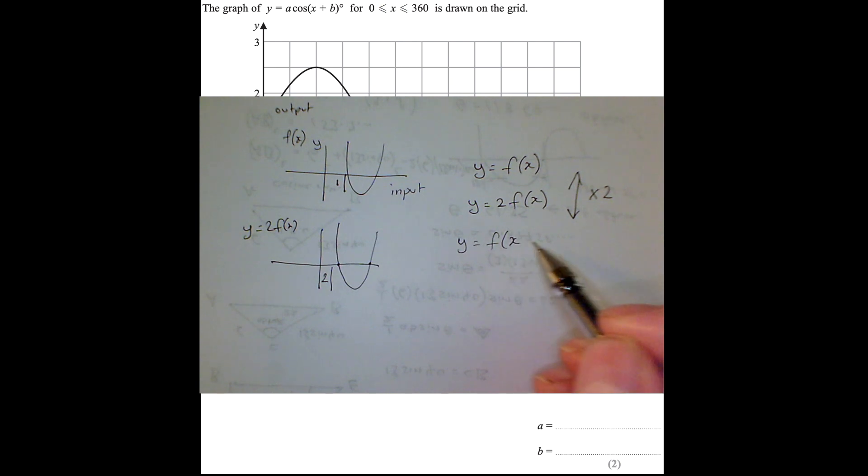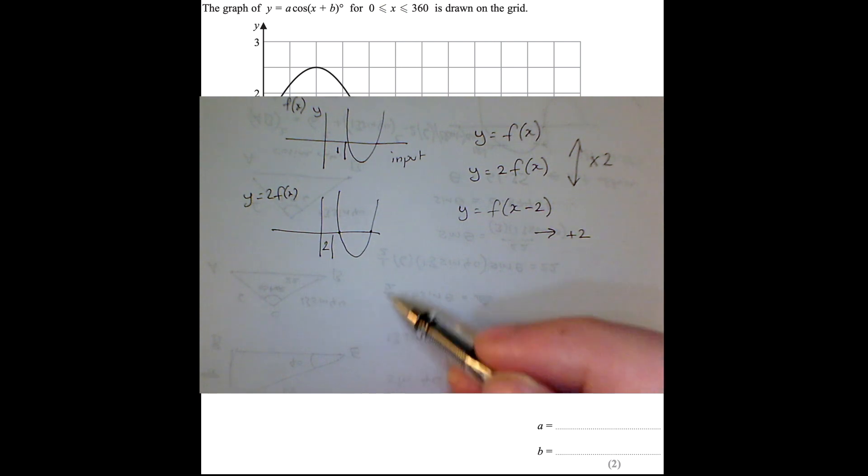So that's the sideways. What about if I want to go x minus 2? Well, that's a left-right change, it's inside the brackets, and we're going to move it to the right two numbers. If it would be f of x plus 2, I'd move it to the left.